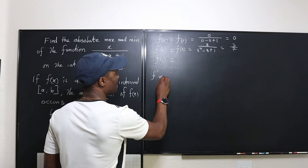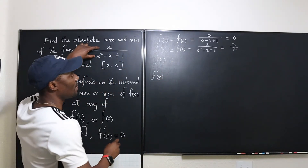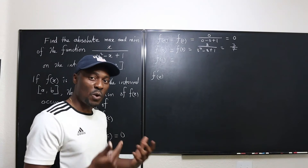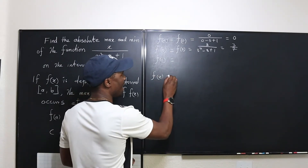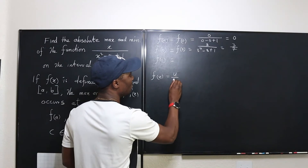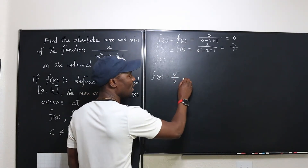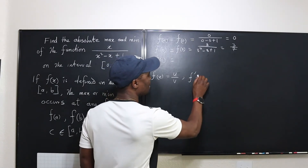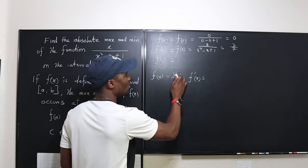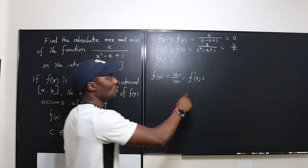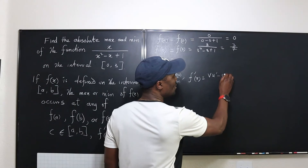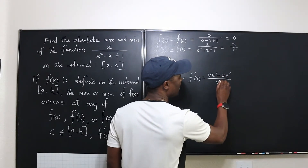Now, what is f'(x)? We're going to differentiate this function. Remember, this is a quotient — a rational expression — so we're going to apply the quotient rule. If f(x) equals u over v, then f'(x) equals v times u' minus u times v' divided by v squared. u and v are both functions of x.